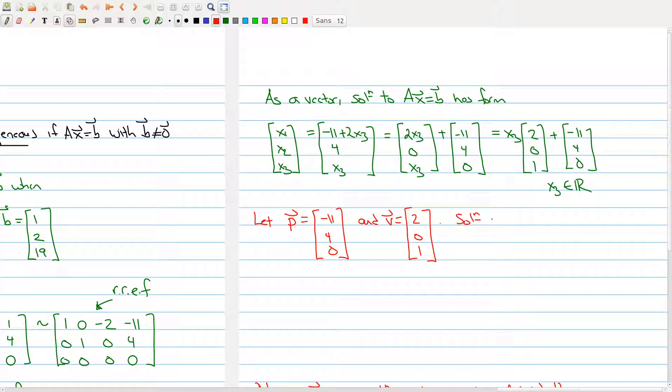So the solution has the following form. X can be written as P plus C times V, with C any real number, because we're taking any multiple of the vector 2, 0, 1, and we're adding the vector -11, 4, 0 to it.